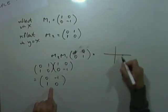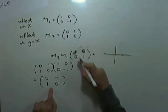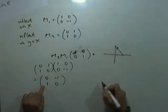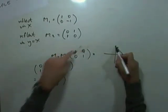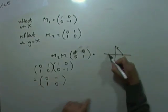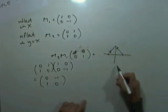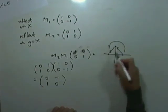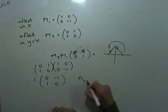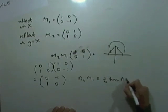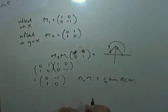If I start with 1, 0, the answer is going to be, the image is going to be 0, 1. So it does that. That takes me there. And if I start with 0, 1, the answer is going to be this. Which is negative 1, 0. So you have to think, what would produce that? Well that's an anticlockwise rotation of a quarter turn. So m2 m1 represents a quarter turn anticlockwise. And it would be the same for the other ones.